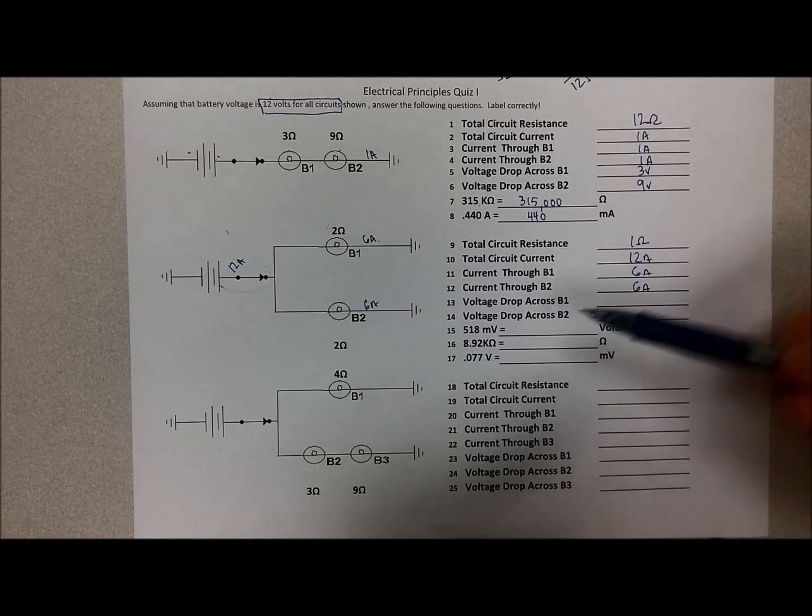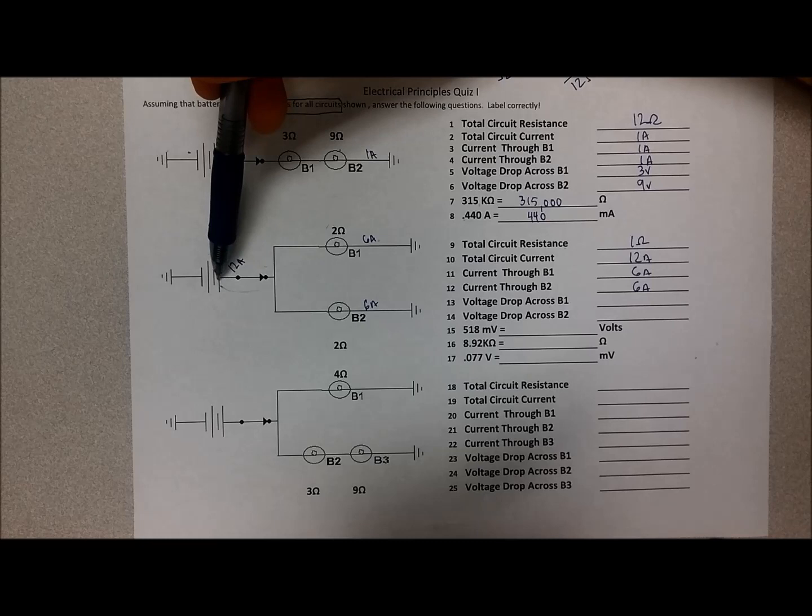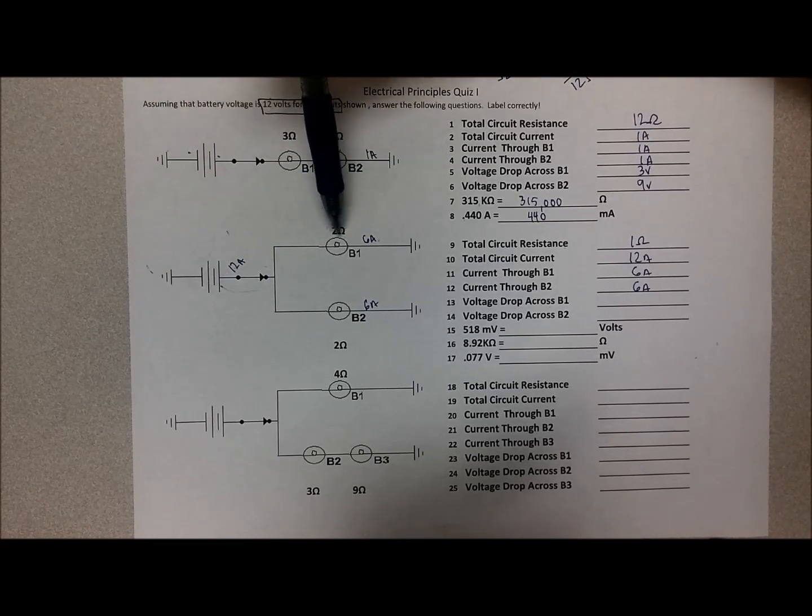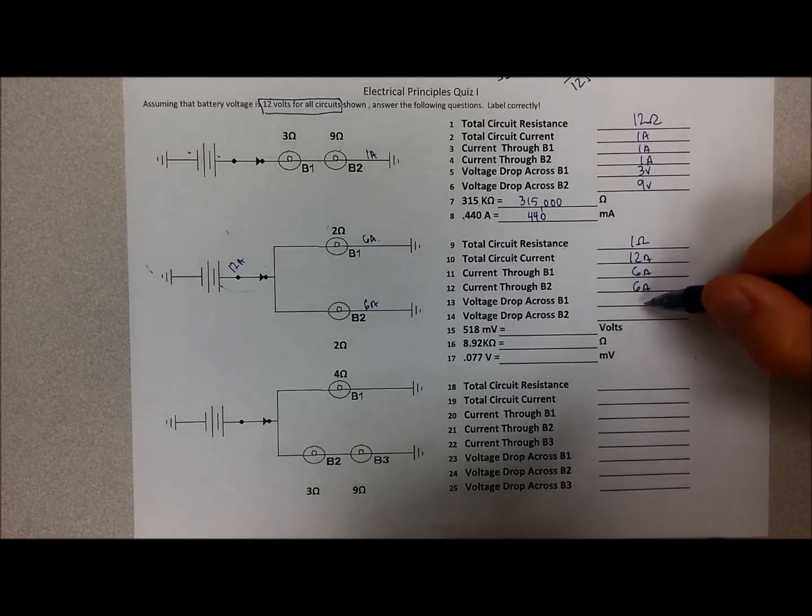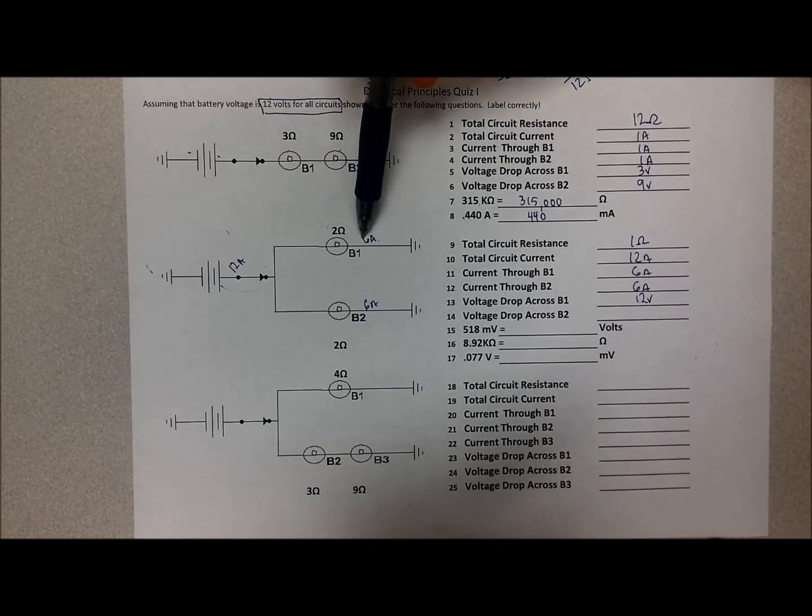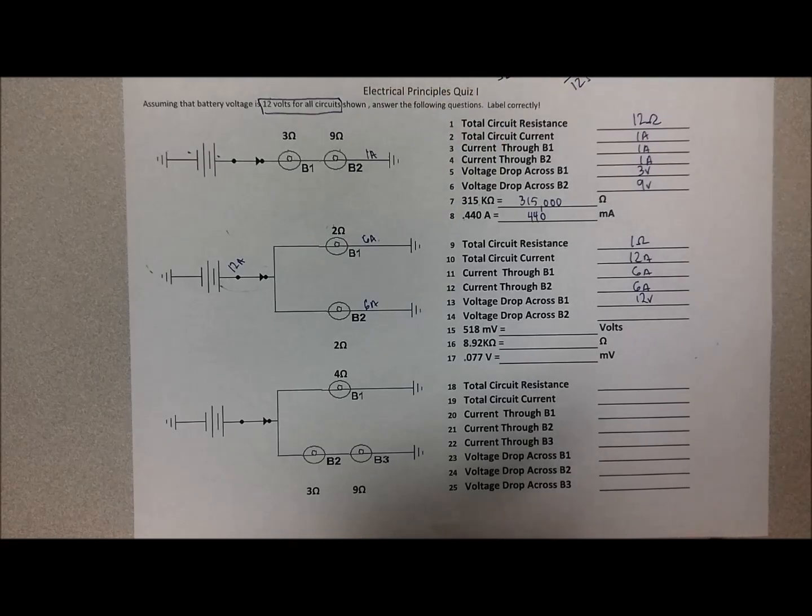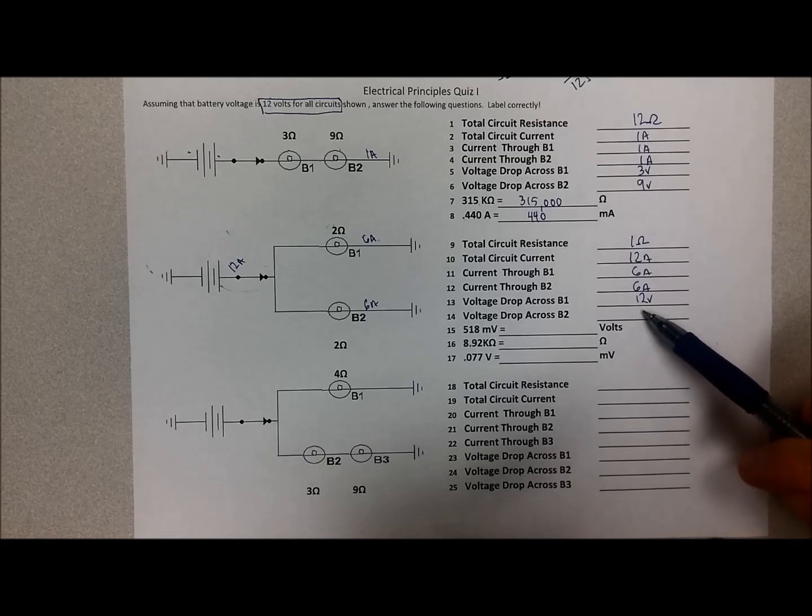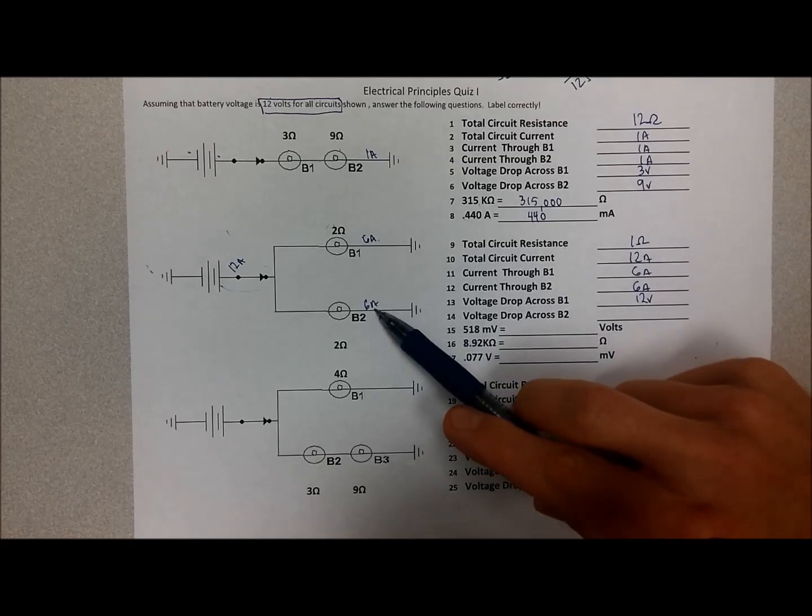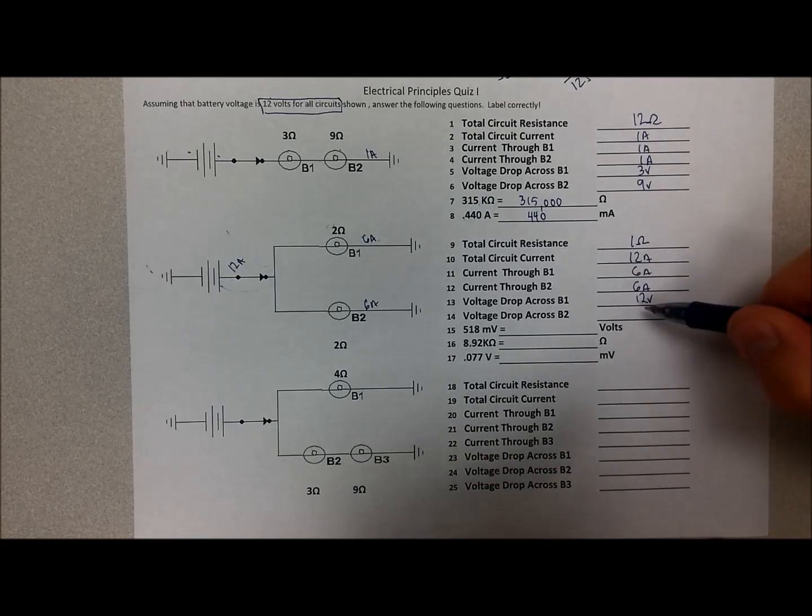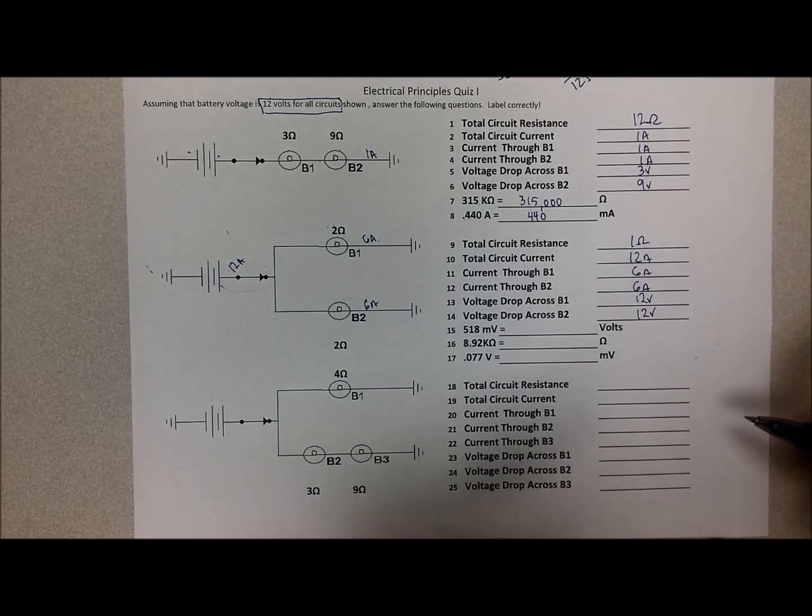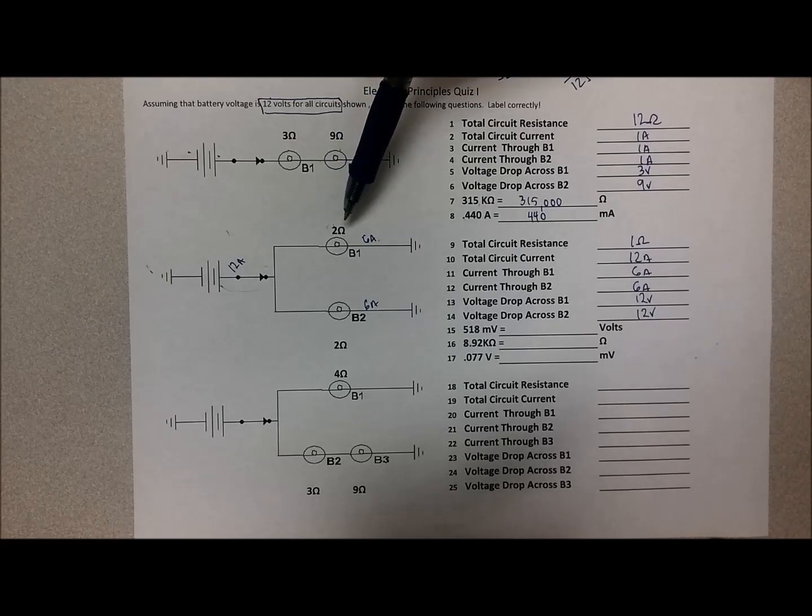Okay, so voltage drop across bulb 1, really easy. That's actually the only bulb in this circuit if we look at it. Here's the battery. There's nothing else in that circuit. There's no series circuit here. So all 12 volts gets dropped there. Or if you want to calculate it, you can say 6 amps times 2 ohms and it ends up being 12 volts also. So it doesn't matter how you do that. Voltage drop across bulb 2, again we had 6 amps going through a bulb that had 2 ohms of resistance or total of 12 volts dropped there also. Whenever there's only one bulb in the circuit, that should always drop all of the voltage.